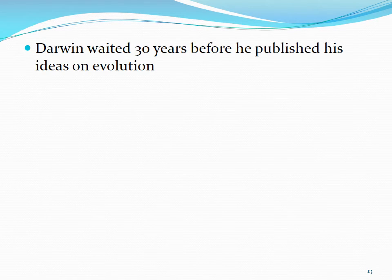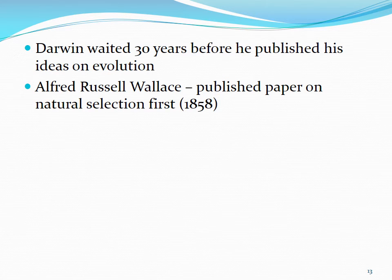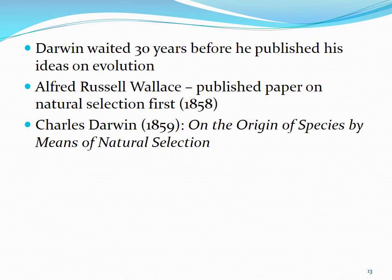Darwin actually waited 30 years after his Galapagos trip before publishing his ideas on evolution. Evolution was strongly opposed at the time, and it was a scary idea to put forward. It wasn't until another biologist, Alfred Russell Wallace, published a paper on natural selection in 1858 that Darwin gained the courage to publish his famous book, On the Origin of Species by Means of Natural Selection.